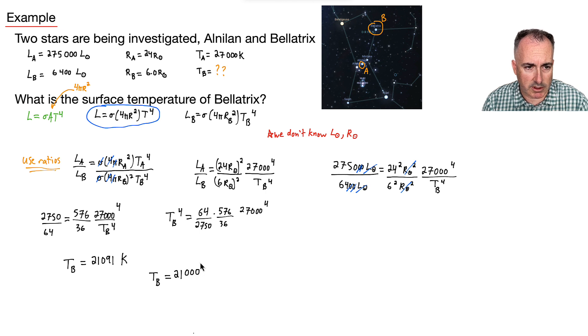So it'll be 21 and everything else will be zeros. So 21,000 like this right here. That'll be 21,000 Kelvin. That'll be the approximate surface temperature of B, of Bellatrix.